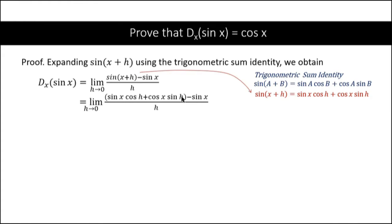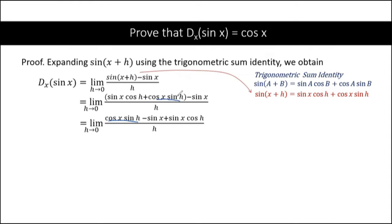Next, we rearrange the numerator. We place cosine x sine h as the first term, then minus sine x, and the last term is plus sine x cosine h, all over h, where h approaches zero.